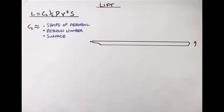Next is the surface of the blade — much like in cricket. If you've got a rough surface the airflow doesn't flow over it as efficiently and you won't get the same amount of lift. With a nice smooth surface you won't get as much early separation, and you'll maintain lift for longer.